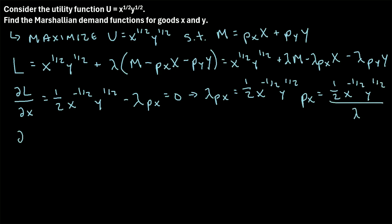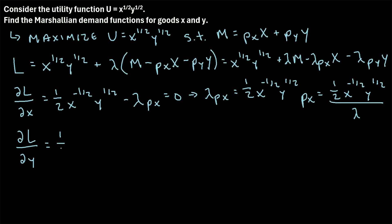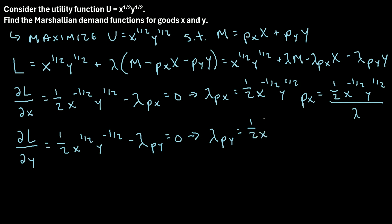Now we repeat this process and find the derivative of the Lagrangian with respect to y. That gives us one-half times x to the one-half times y to the negative one-half, minus lambda times p_y, set equal to zero. Solving, lambda times p_y equals one-half x to the one-half times y to the negative one-half, and dividing both sides by lambda, we get p_y equals one-half x to the one-half times y to the negative one-half, divided by lambda.